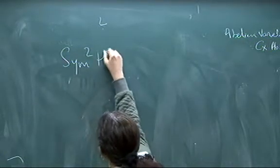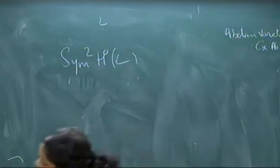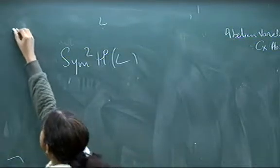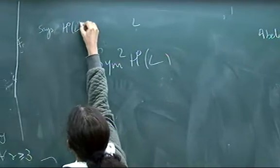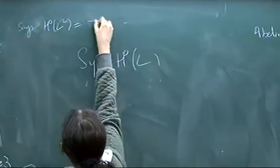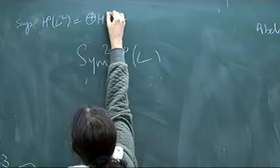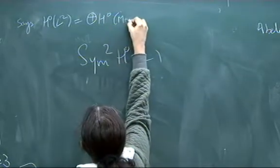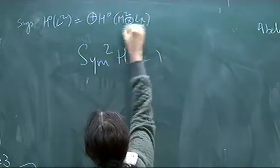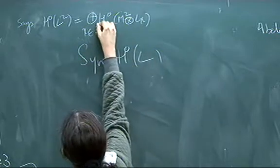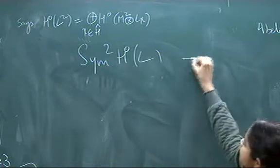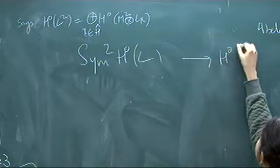Sym^2 H^0 L. And actually, this isogeny also says that the sections of L power square, this can be written as direct sum of sections of L power square.